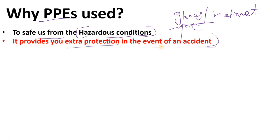Second, PPE provides you extra protection in the event of an accident. Suppose there is any accident — you will first wear PPE then go there. Suppose if you are roaming in the plant taking readings and you did not wear a helmet, and your head strikes with some vessel — it may create an accident. So if you have a helmet, it will prevent you from that accident. It provides you the extra protection.